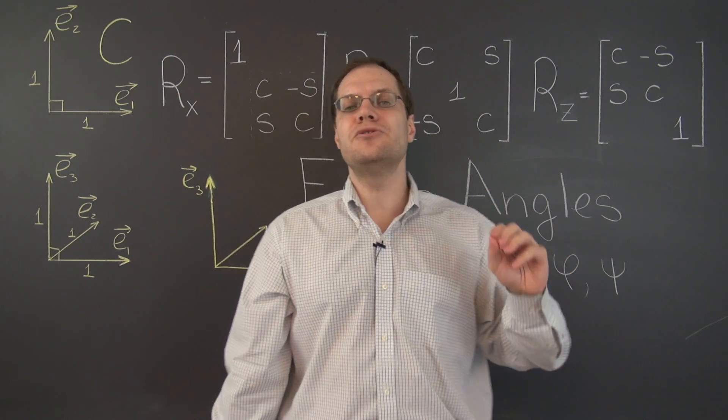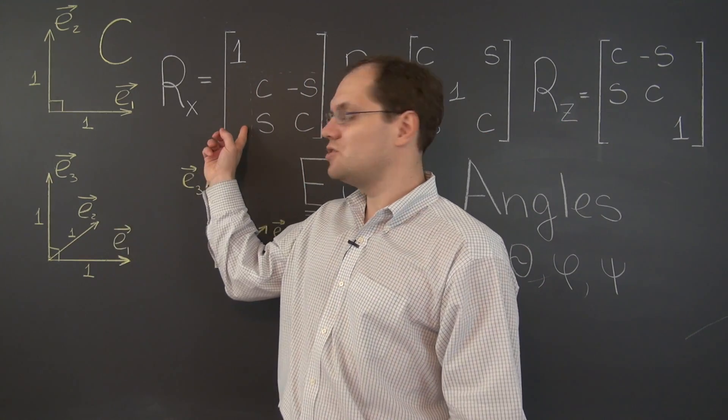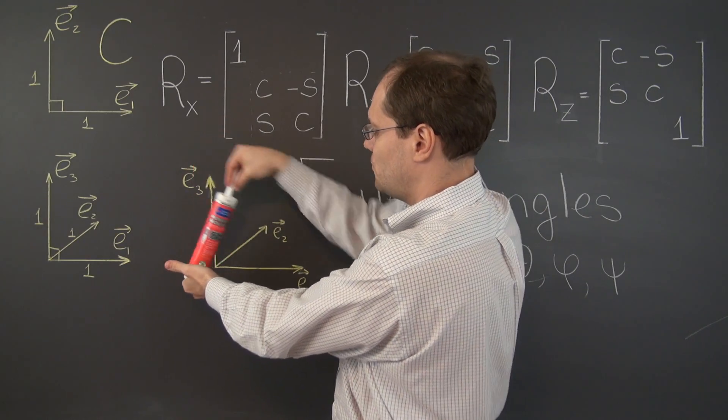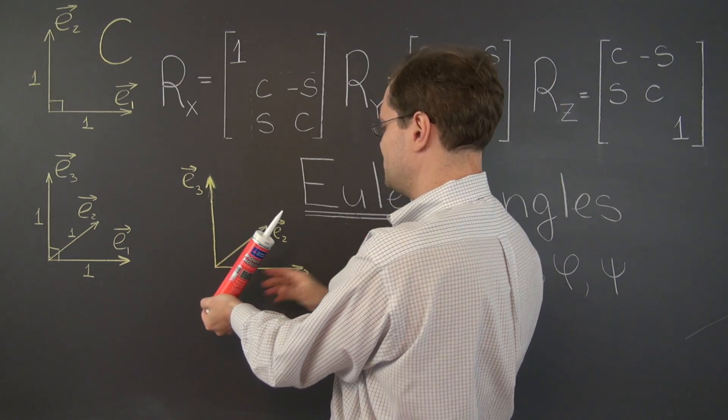Then you can get to any orientation by using these three matrices, and as you saw, we really didn't use this one, because it was z, z, y, z, z, y, z. These are the only two matrices we need.